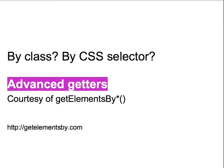Advanced get methods are also a part of most JavaScript libraries. A JavaScript library is a collection of helpful functions that make writing JavaScript more efficient. If you're writing your own JavaScript, I highly recommend using a JavaScript library. There are lots to choose from, including Prototype, Dojo, YUI, jQuery, and MooTools, and many others.